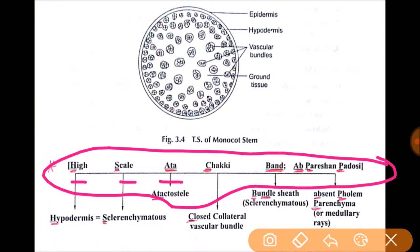High scale atta chakki bandh ap parishaan parosi. So H is for hypodermis, S is for sclerenchymatous cells.